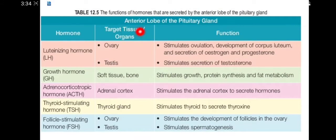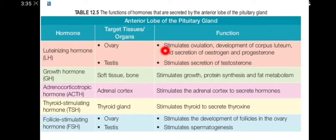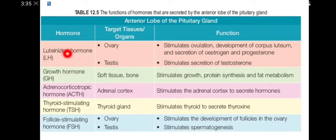The anterior lobe produces more hormones compared to the posterior lobe. For example, LH or luteinizing hormone targets the ovary or testis. In the ovary, it stimulates ovulation, development of the corpus luteum, and secretion of estrogen and progesterone. In the testis, it stimulates the secretion of testosterone.